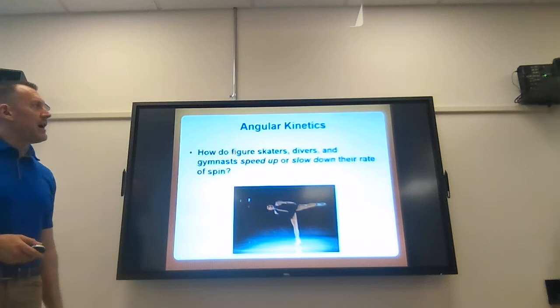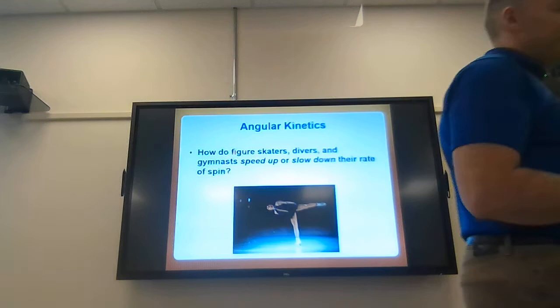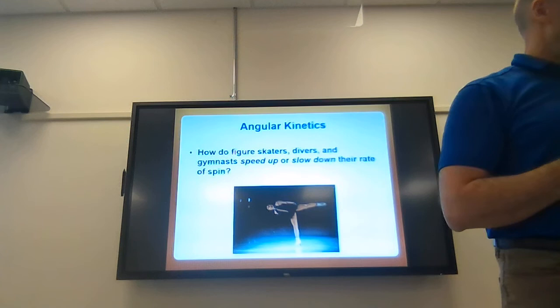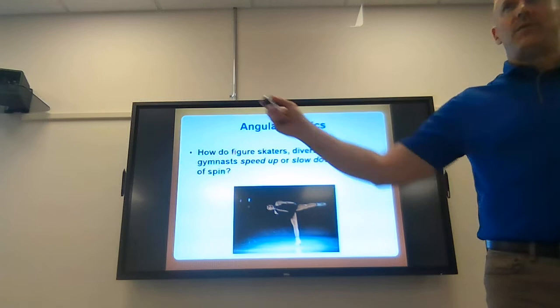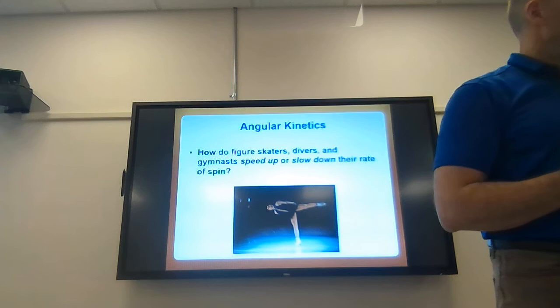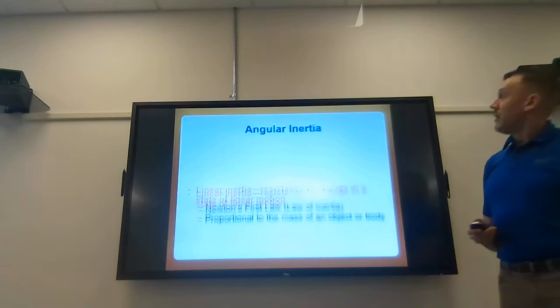A key question for this chapter: how do figure skaters, divers, and gymnasts speed up or slow down their rate of spin? You may have watched the Olympics and seen a figure skater go into a spin - at the beginning their arms are out, then they bring their arms in and they speed up. There seems to be a relationship between how body mass is distributed further from the axis versus close to the axis and angular velocity. The relationship is inverse - as we bring more mass close to the axis, that increases angular velocity.